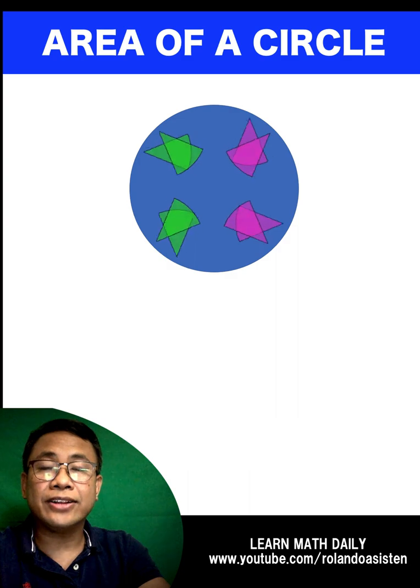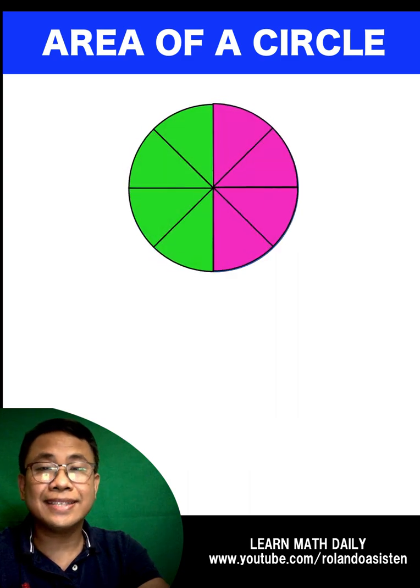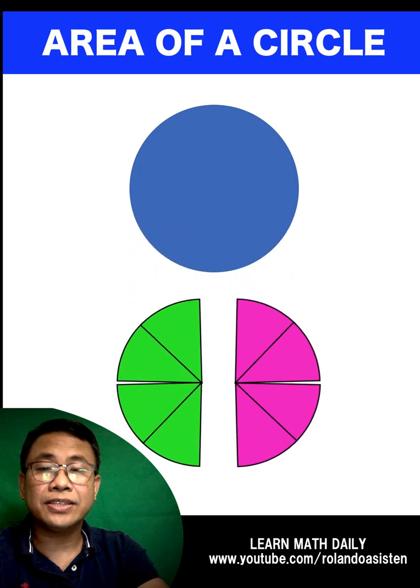Let's begin by cutting down our circle into sectors. Then let's separate these sectors from the main circle so we can analyze this.